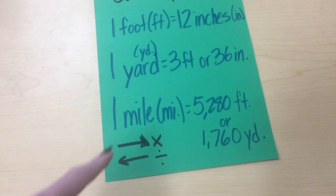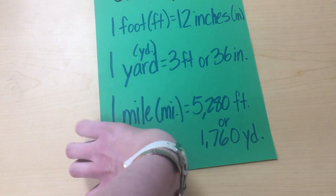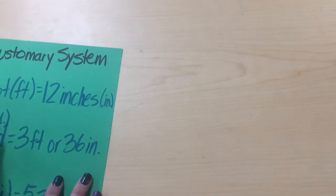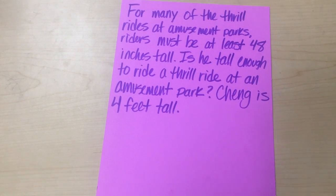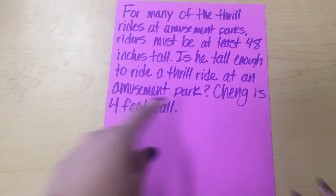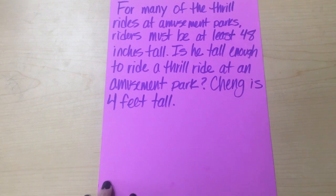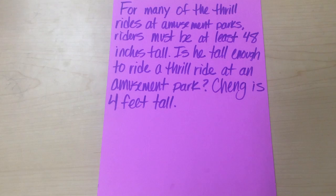As we do this chart, you're going to learn if you're going to be multiplying or dividing. I'll show you that later on. So let's start with our first problem. Here's our first problem. For many of the thrill rides at amusement parks, riders must be at least 48 inches tall. And by the way, this sentence we're supposed to be next. Chang is four feet tall. Is he tall enough to ride a thrill ride at an amusement park? Let's look and see.